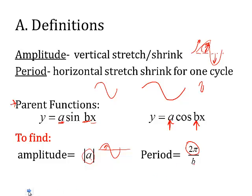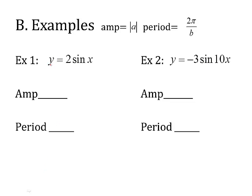Example 1: y equals 2 sine of x. I need to find the amplitude. Here's my A — A is 2. The absolute value of 2 is 2. For the period, B is the number in front of x. If there's nothing there, B is 1. So the period is 2π divided by 1 — my period hasn't changed from the parent function. It's still just 2π.